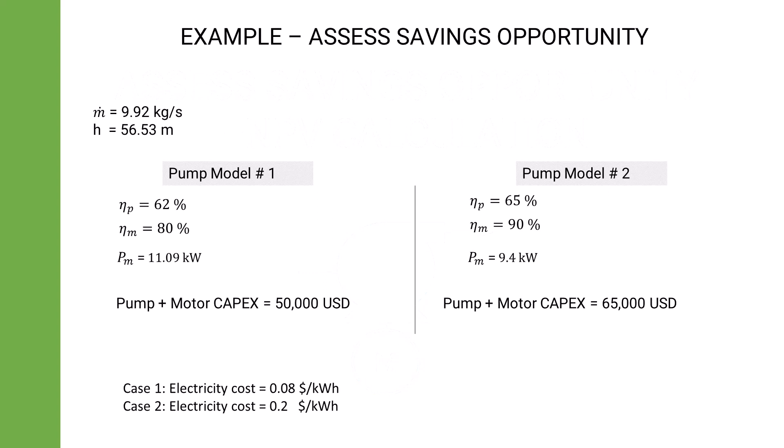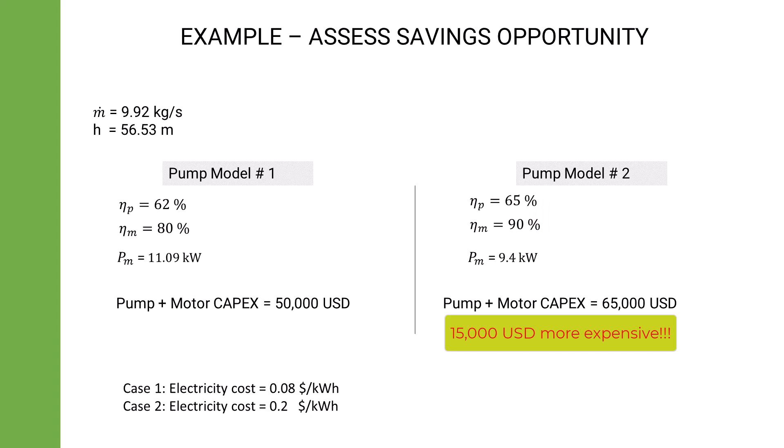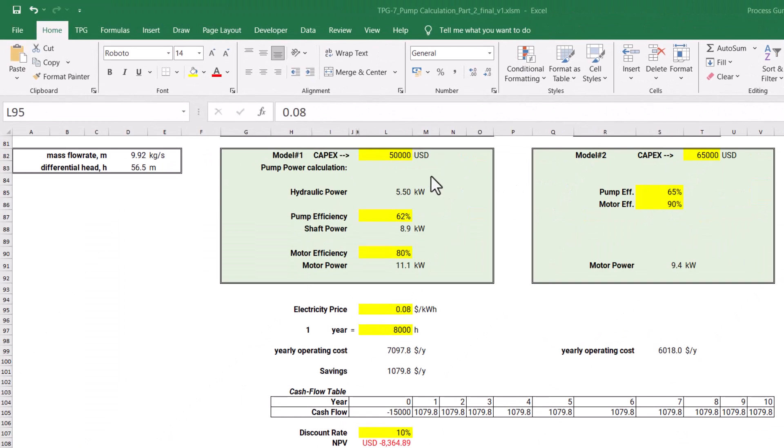Now I want to take you through a quick method to assess savings opportunities. Let's expand this example: suppose the vendor has given us two different model choices for our service. Model one is cheaper than model two. Model two is more efficient in terms of both pump and motor efficiencies but is fifteen thousand dollars more expensive than model one. Because of its higher efficiencies, model two has lower operating costs. We need to assess whether it is worth spending the extra fifteen thousand dollars.